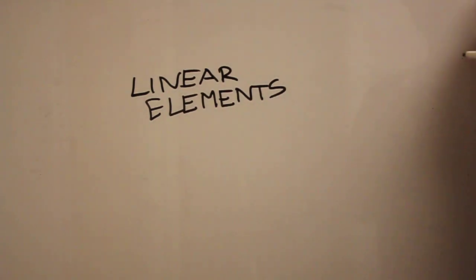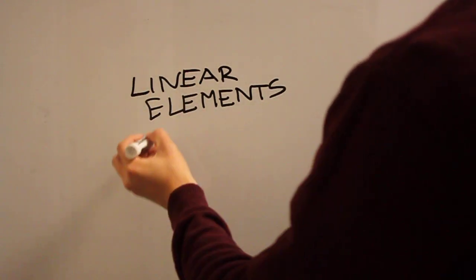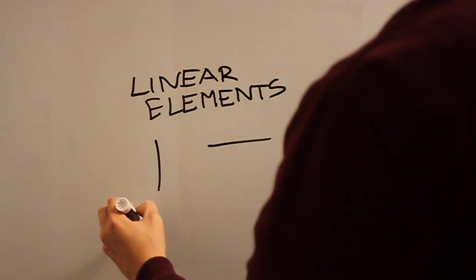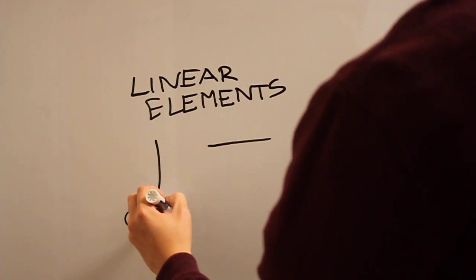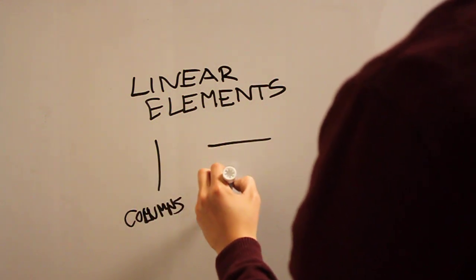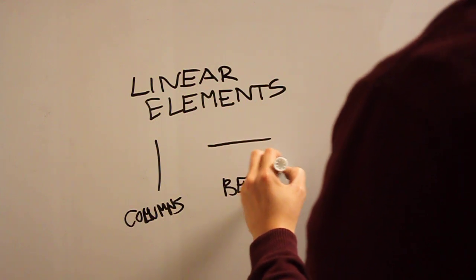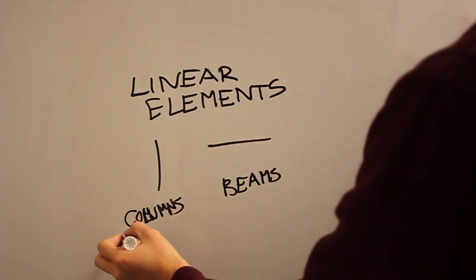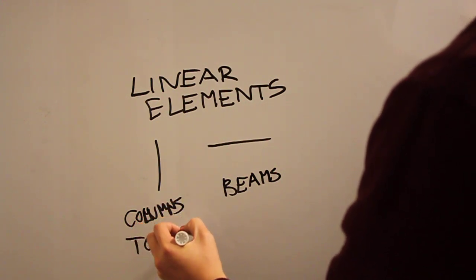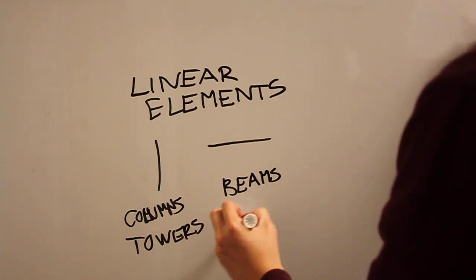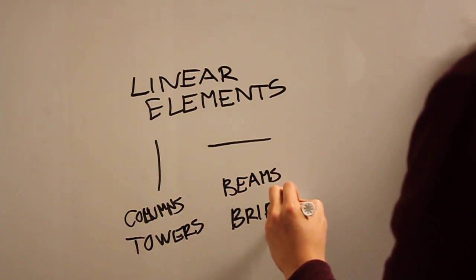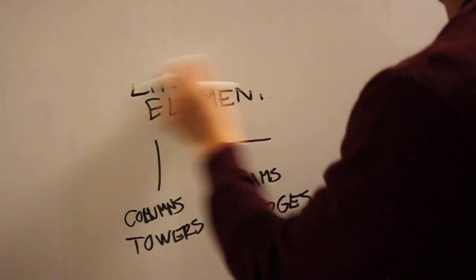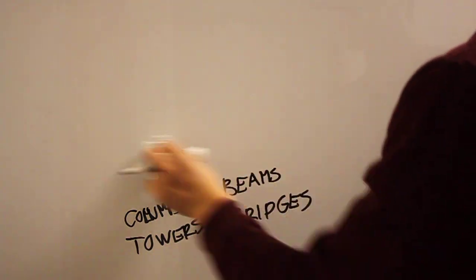We're going to focus on two linear elements. Going back to the previous video about vertical versus horizontal, what you'll see most commonly is that the vertical is described by columns at the small scale and beams at the small scale. These can be magnified to the idea of towers and bridges. But we can look at just a couple of examples of how you might use these elements in architecture and what they might mean.